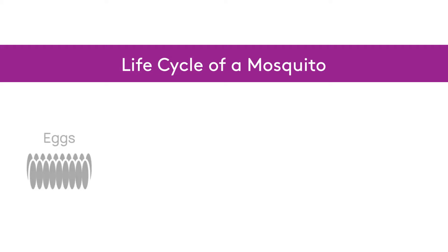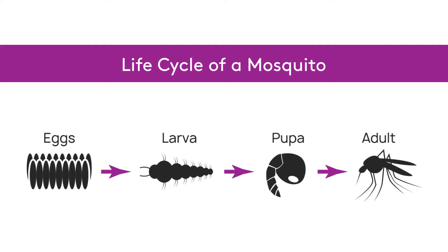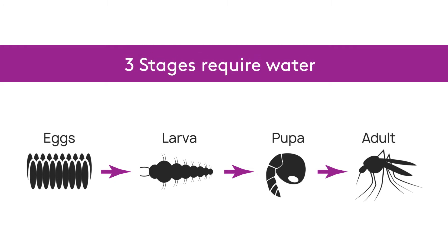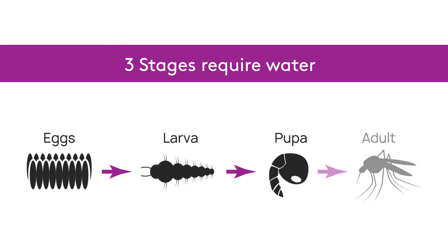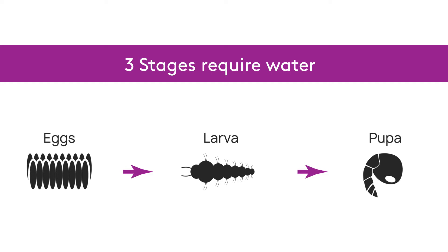There are four stages in a mosquito life cycle: egg, larva, pupa, and adult. Three of these stages require water to complete — the egg, the larval, and the pupal stage.